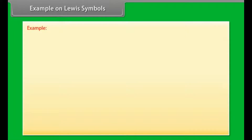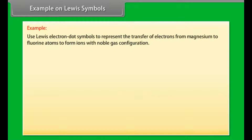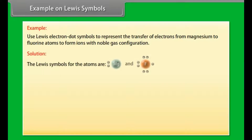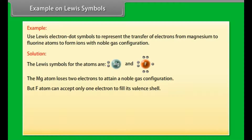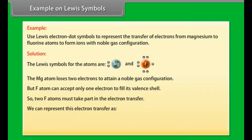Example on Lewis symbols. Use Lewis electron dot symbols to represent the transfer of electrons from magnesium to fluorine atoms to form ions with noble gas configuration. The Mg atom loses two electrons to attain a noble gas configuration. But the F atom can accept only one electron to fill its valency shell. So two F atoms must take part in electron transfer.